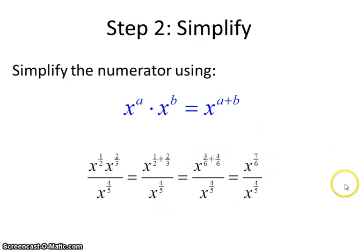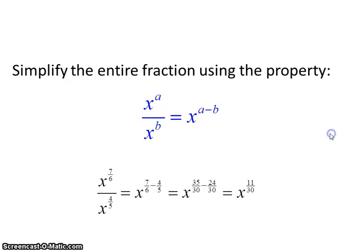Now we can work with this. We know another property that if we have x to the a power divided by x to the b power it's x to the a minus b. So we just have to subtract these two exponents. Seven-sixths minus four-fifths. In this case our LCD is thirty. That will give us thirty-five-thirtieths minus twenty-four-thirtieths which is eleven-thirtieths. So we've gotten this down to x to the eleven-thirtieths power.